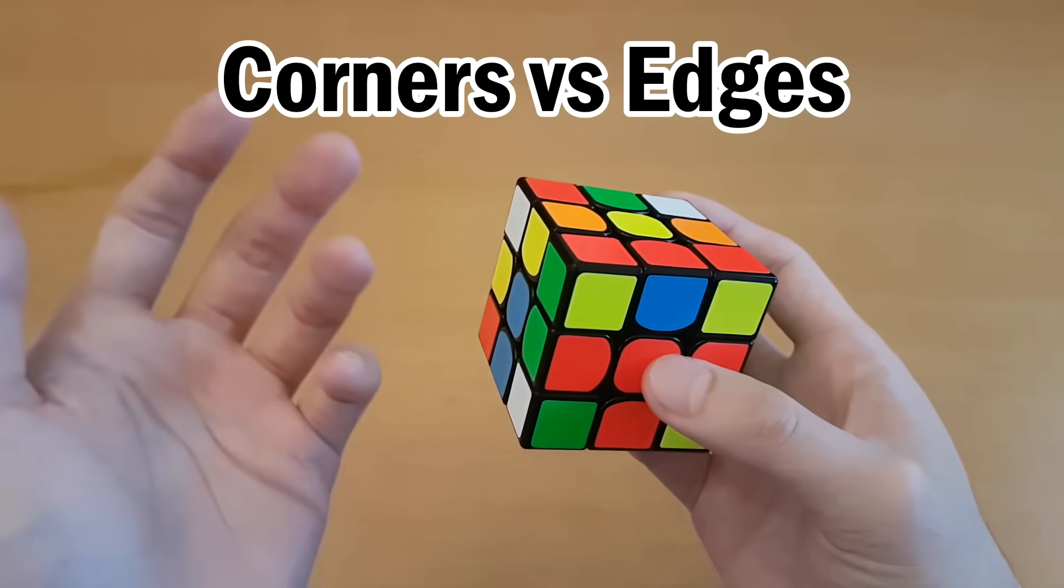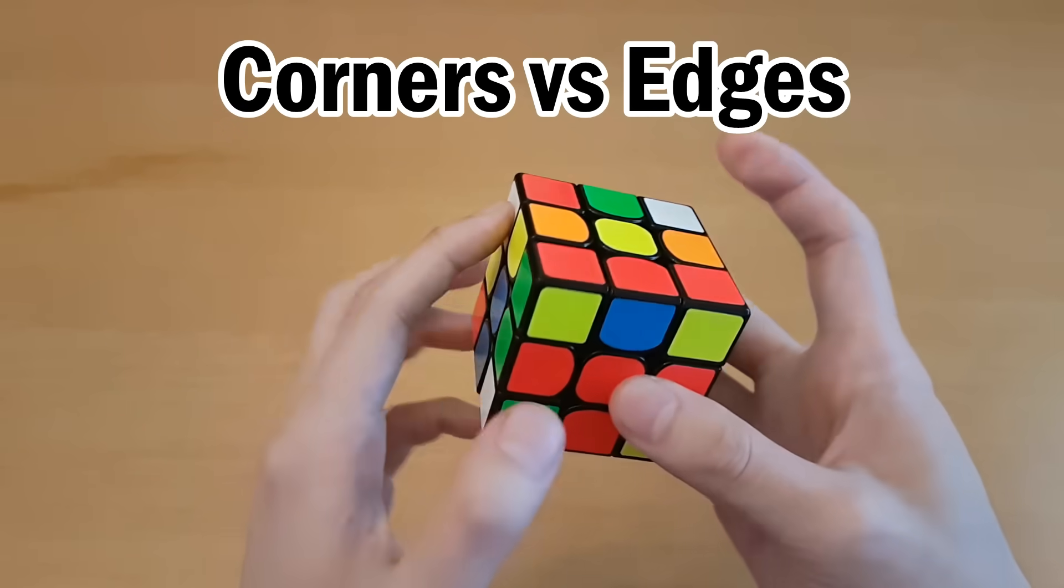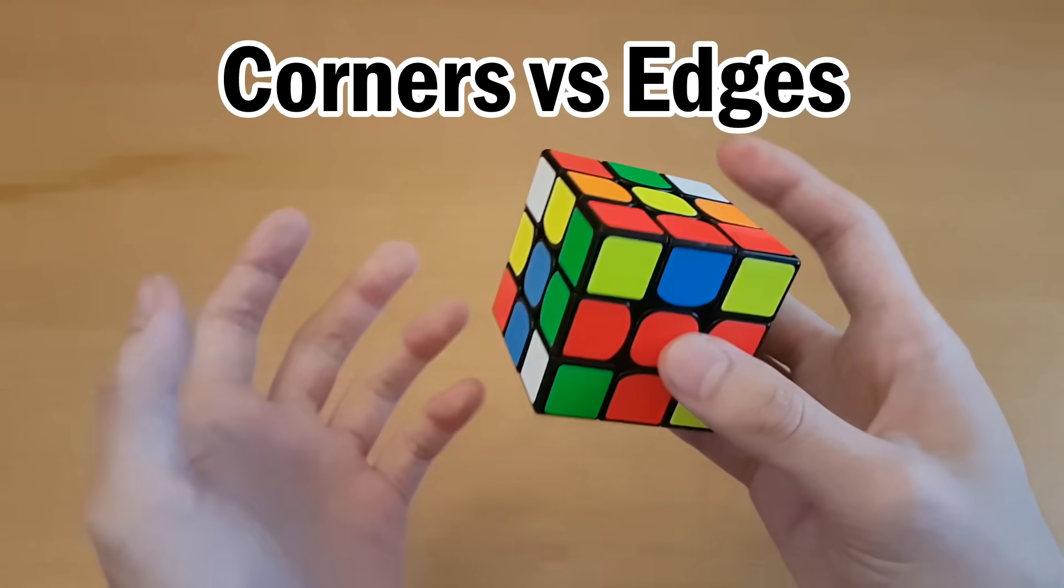So first of all, there's a factor of what's easier to find, corners or edges. And the answer is probably going to be corners because they have white or your cross color on them, and those are easier to spot.